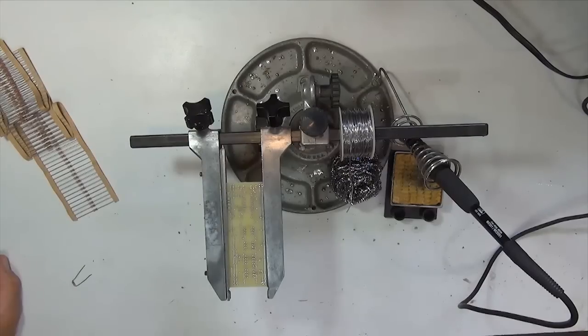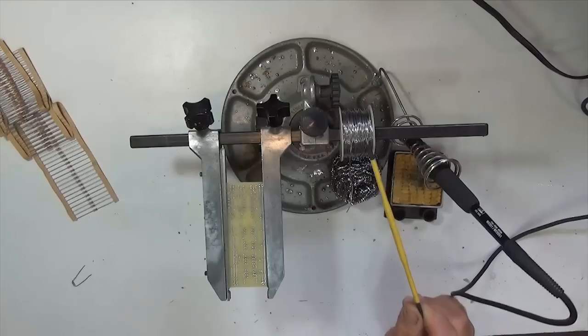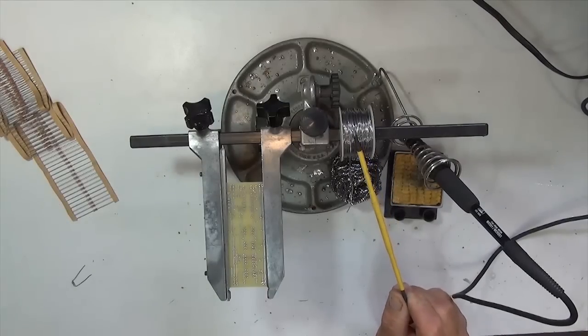I'm now ready to solder the resistors onto my circuit board. I have my soldering iron set to 600 degrees Fahrenheit. I have my 60-40 solder on the spool right here. This is my 60-40 solder, rosin core.